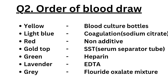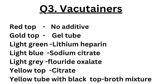Question number two: order of blood draw. To avoid additive carryover, blood samples should be collected in a specific order. First, collect the yellow tube for blood culture bottles, then light blue for coagulation studies, red tube — that is no additive, no anticoagulant. Next is gold top tube, that is serum separator tube, green tube of heparin, lavender tube with EDTA, and gray tube with fluoride oxalate mixture for sugar estimation.